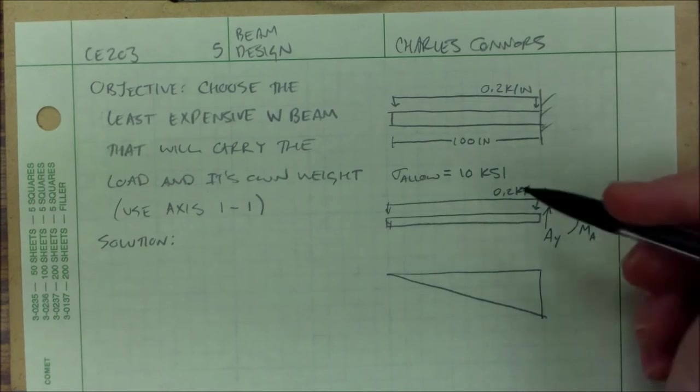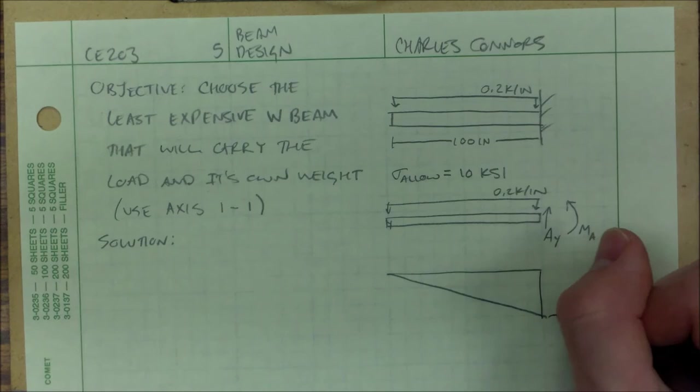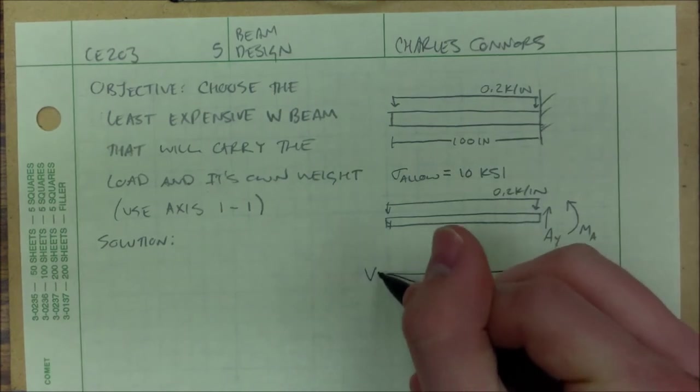Which means my total shear is going to be 0.2 times 100, or 20 kips. So that's for my shear diagram.